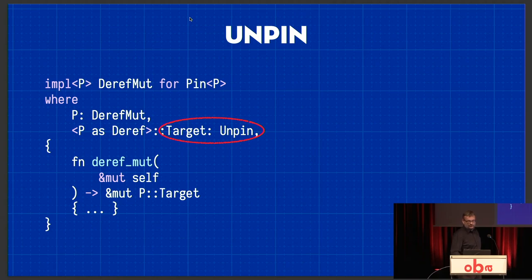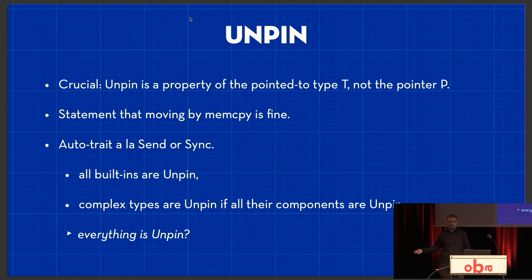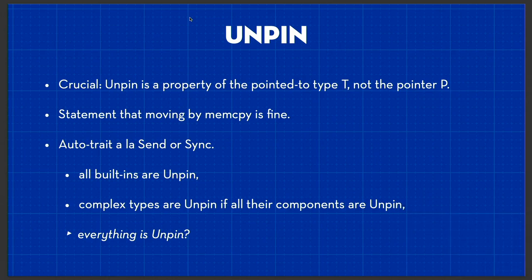Unpin is a trait, obviously. And crucially — because this leads to confusion — Unpin is implemented by the type your pointer points to, not by the pointer. The pointer doesn't care; the type it points to needs to be Unpin or not. And what it says is: actually, just move me around, it's fine. Because most types, as we've seen, can be moved just fine — that's a fundamental principle of Rust. So most types actually can be moved around, and we don't really need this Pin thing. We just need this for these weird self-referential things.